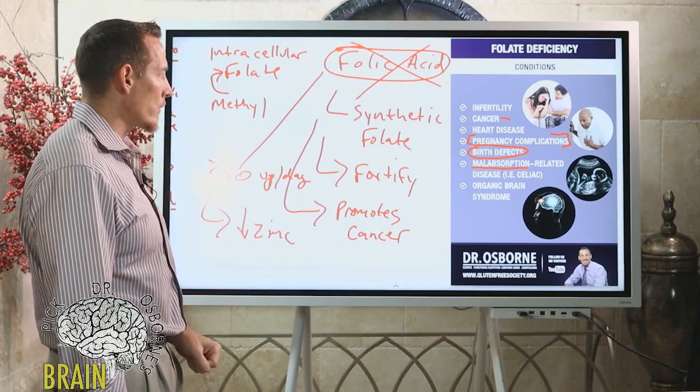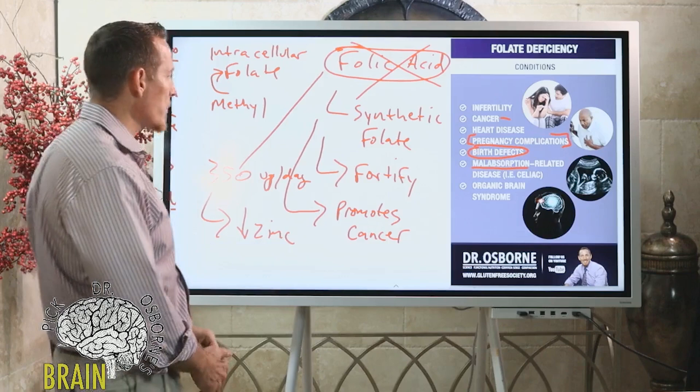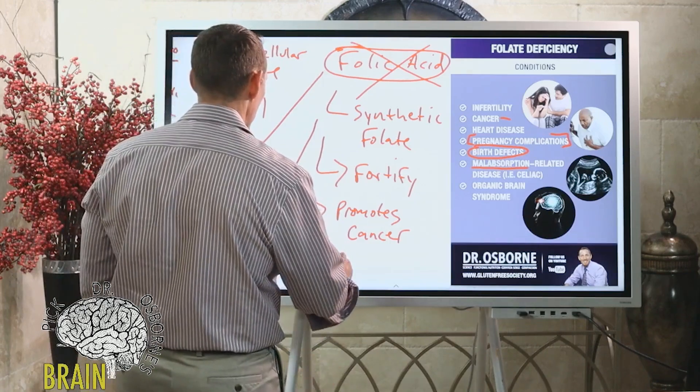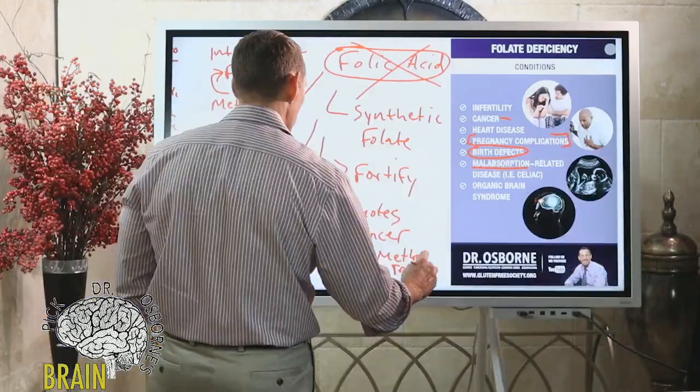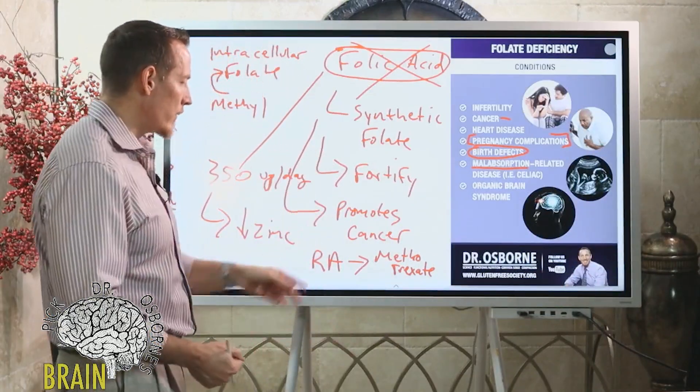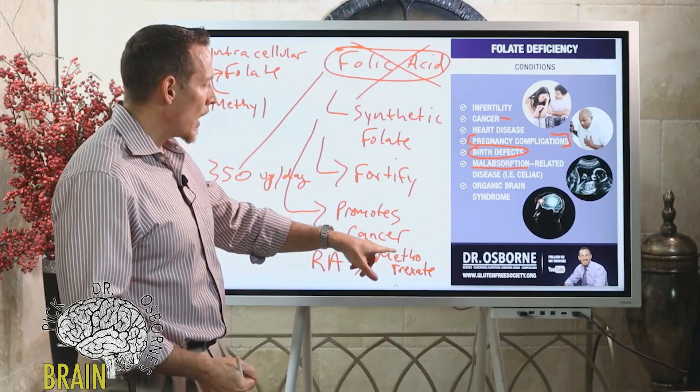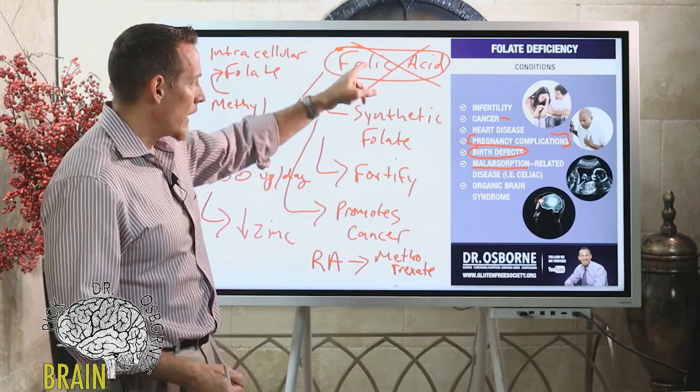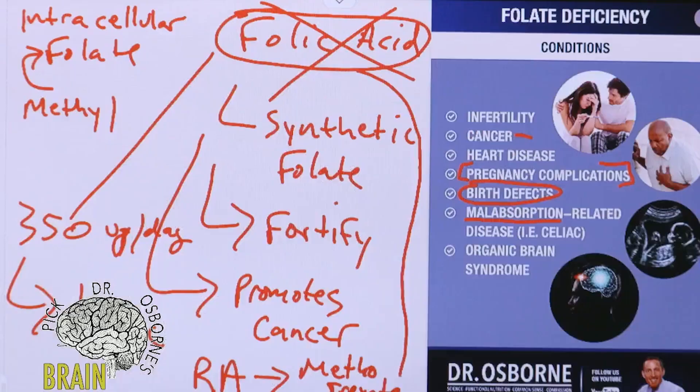This is especially true if you have rheumatoid arthritis. Doctors oftentimes prescribe a medicine called methotrexate. Methotrexate is an anti-cancer drug, but it's also known as a disease modifying anti-rheumatic drug or DMARD, and this medicine blocks folate.